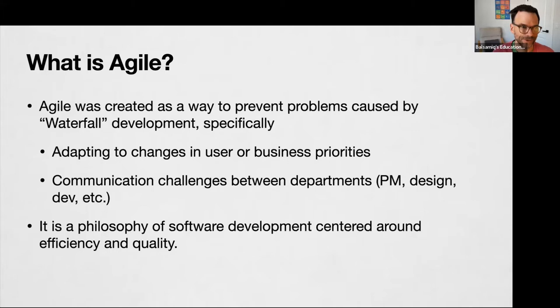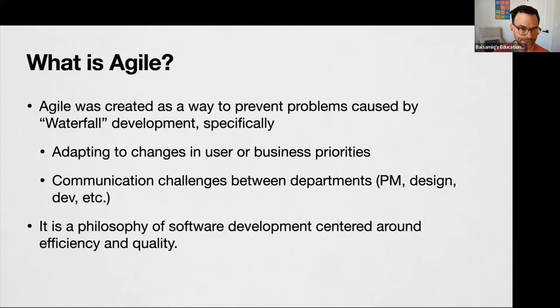In waterfall development, everything was very siloed. It's really more of a philosophy of software development centered around efficiency, quality, and reducing waste. Before Agile, software development was more like an assembly line. A product manager would write a big long requirements specification document, then hand it off to the design team, who would create a big involved detailed prototype, then hand that over to the development team.